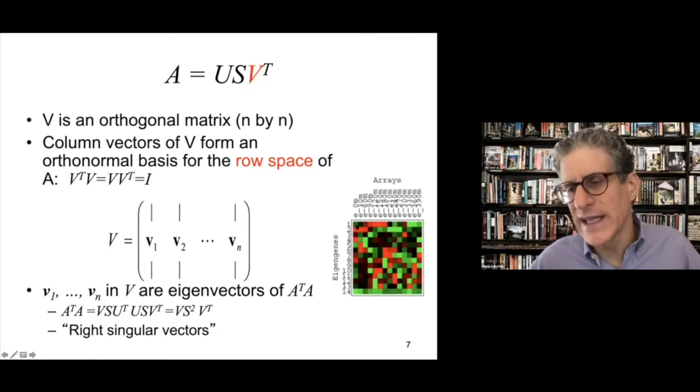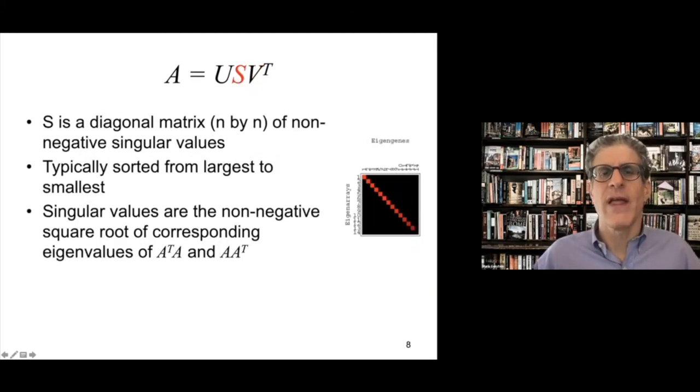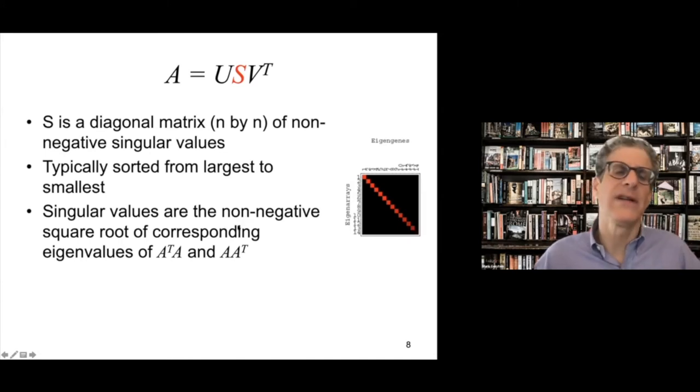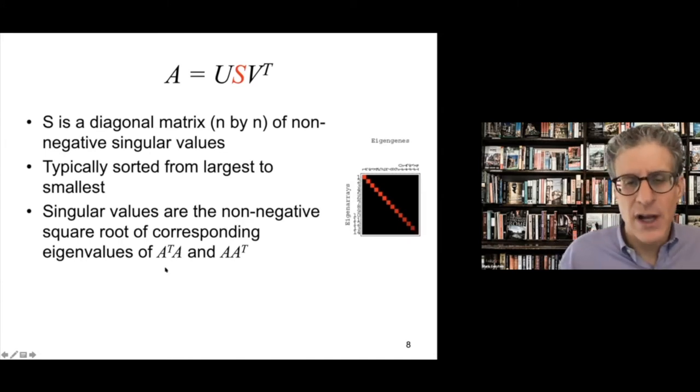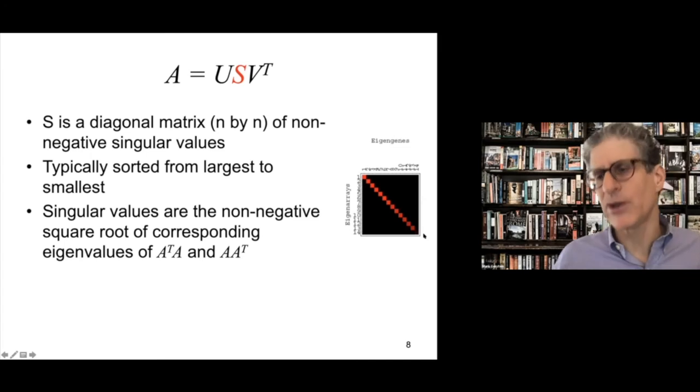The V matrix is the same thing. It's just the other one around. It's the eigenvectors of the A transpose A matrix. And this provides a kind of orthonormal basis for the row space. And essentially what this is, is these are eigen genes that give you characteristic patterns of expression over all the different assays. And then the S matrix is this diagonal matrix that tends to be sorted from largest to smallest. And this actually contains essentially the eigenvalues of the A transpose A or AA transpose problem.